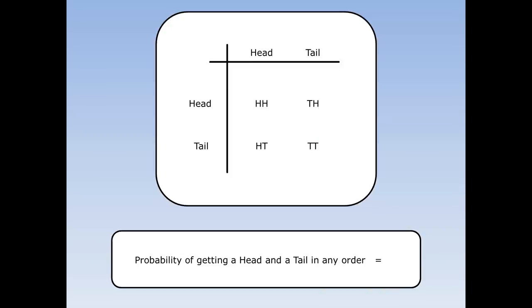What's the probability of getting a head and a tail in any order? Well there's two places this happens. I could get a head then a tail or a tail then a head. And there are four things that could happen altogether. So the chance of getting a head and a tail in any order is two out of four.